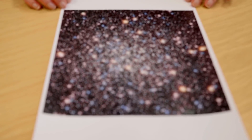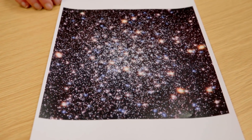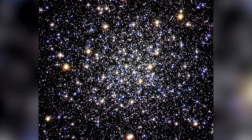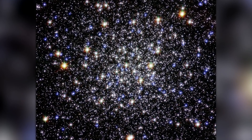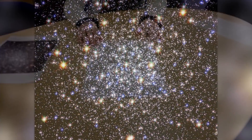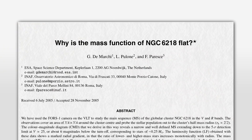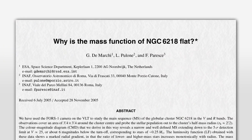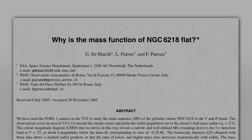Our object today is Messier 12, otherwise known as NGC 6218. And we're here to talk about a mystery, which is uncovered in this paper title: why is the mass function of NGC 6218 flat?